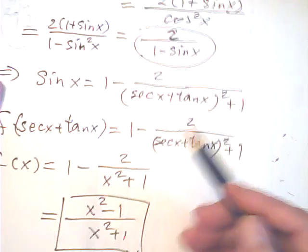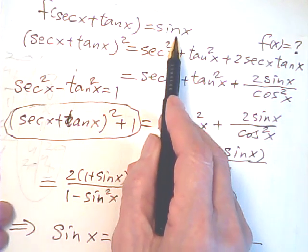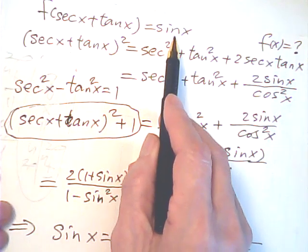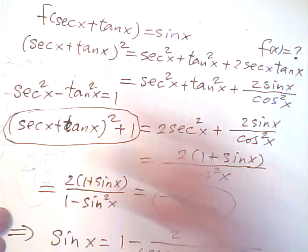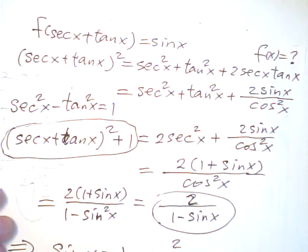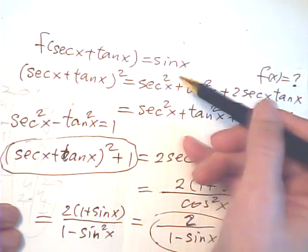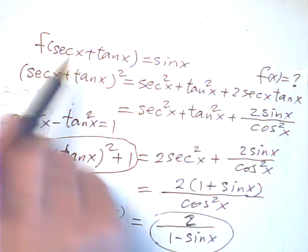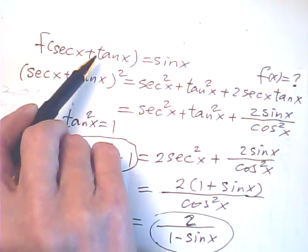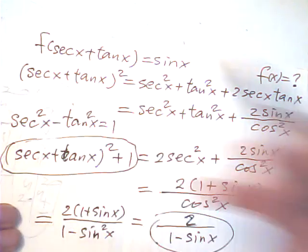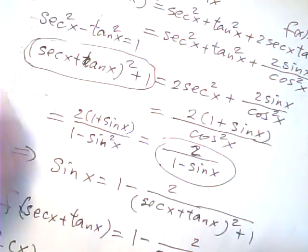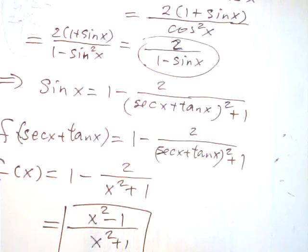So in method one, the idea is very clear: I try to build up the relation between sin x and (sec x + tan x). If going directly from sin x to sec x + tan x is difficult, then working the other direction works. This is method one.